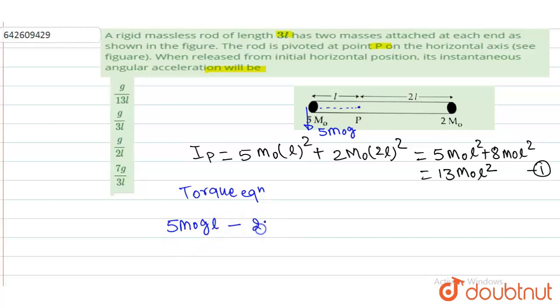Minus 2M₀g into 2L. Then, this is distance. And that torque is equal to Iα. We know the equation. This is 5 minus 4, so it is going to be M₀gL.